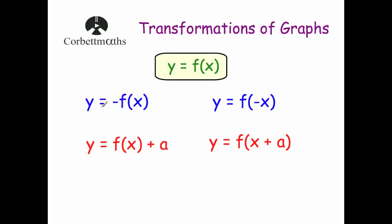To recap: y equals minus f of x flips it vertically — reflection in the x-axis. Y equals f of minus x flips it horizontally — reflection in the y-axis. Y equals f of x plus a moves it a squares upwards, or downwards if it's minus. And y equals f of x plus a moves it a squares to the left (even though you'd think right), and f of x minus a moves it to the right.